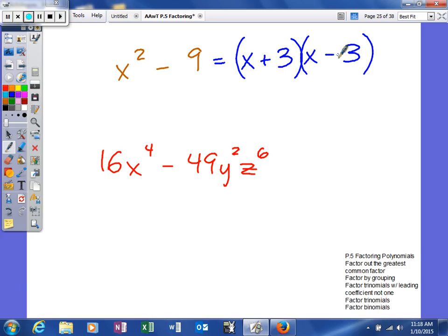Looking at our next example, 16x to the fourth minus 49y squared z to the sixth. Okay, so again, our checklist: is there a common factor? That is no. Next, we identify how many terms. We have two terms because there's one minus sign. The only way we know how to factor a binomial right now is if it's difference of squares. So we have two terms. I can take the square root of this term, I can take the square root of this term, and there's a minus sign in between. So I know I have difference of squares.